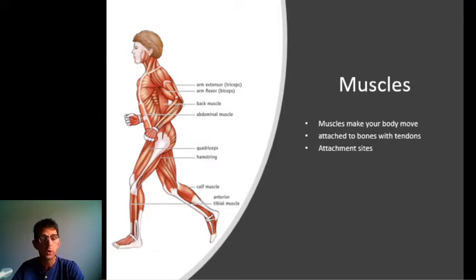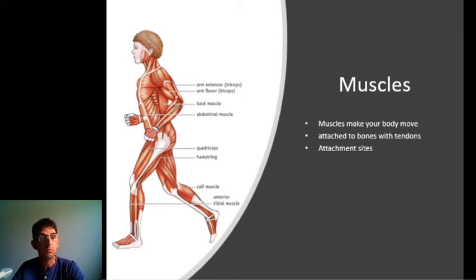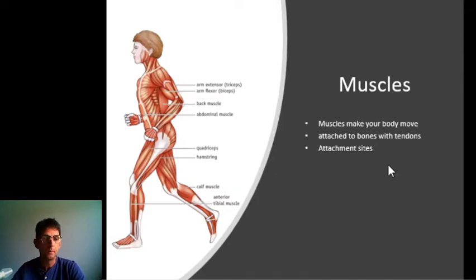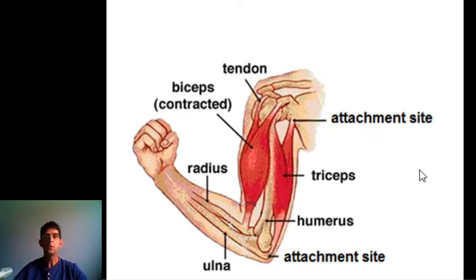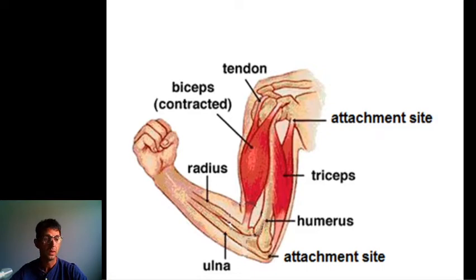Muscles are always attached to two different bones, so in that case you can move a synovial joint. When we get to the muscles, we can see that muscles are only able to contract — so they get shorter.